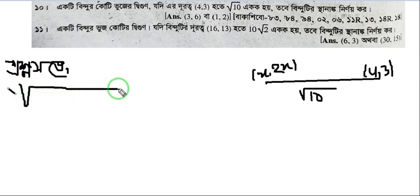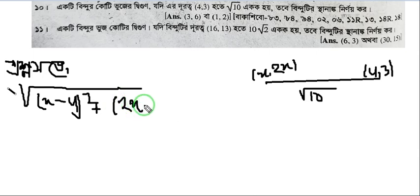Let me show you the setup. We have root of (x-4)² plus (2x-3)² equals root of 10. The distance formula gives us this equation, where the square root on the left equals root 10 on the right.